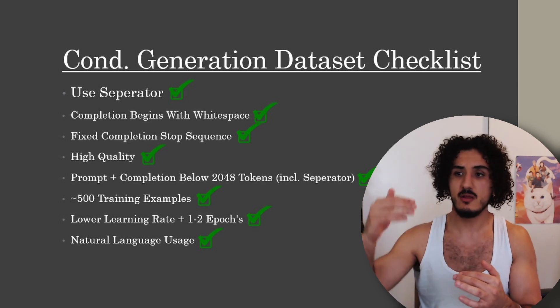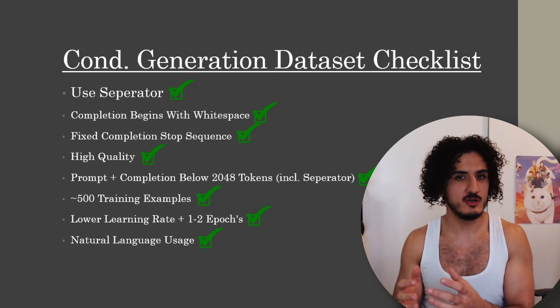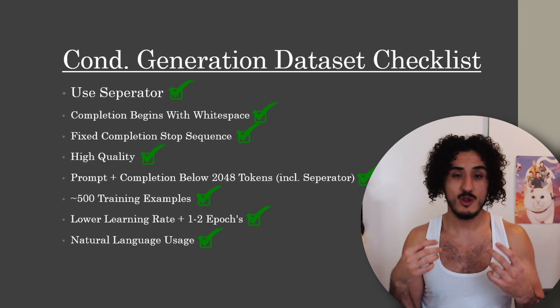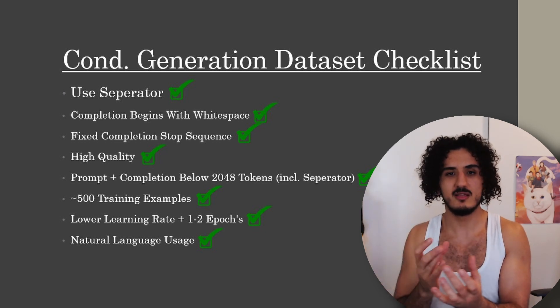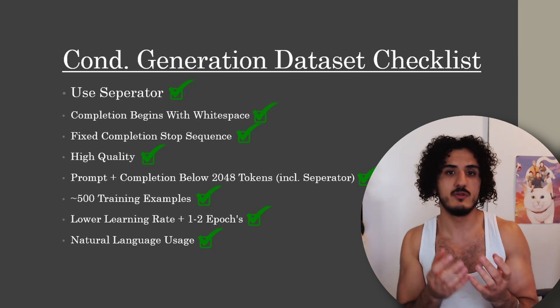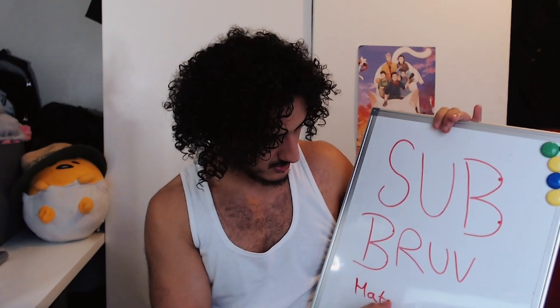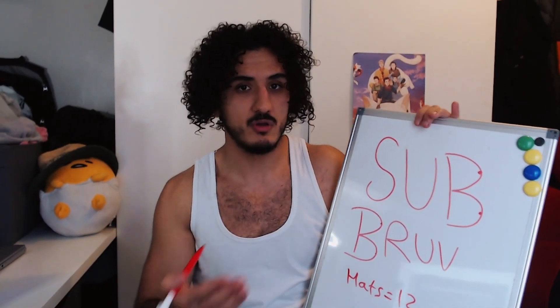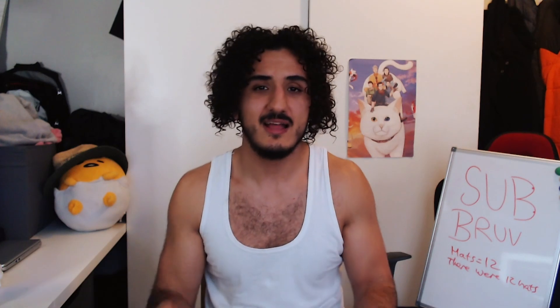For conditional generation, the first three dataset requirements are pretty much the same as classification. The unique part is that you need about 500 examples of how you want the text to be outputted depending on the input. OpenAI recommends lower learning rates and epochs. Also make sure you use natural language within your prompts — for example, instead of writing 'hats = 12', it would be better to say 'there were 12 hats.' This is probably just due to how the DaVinci model was trained.